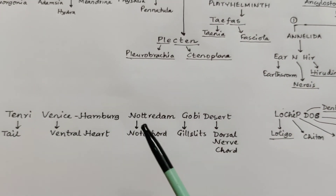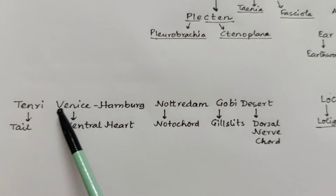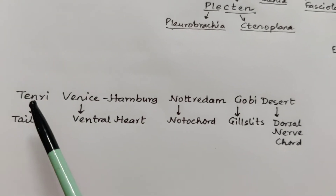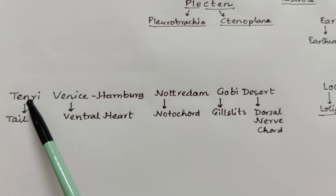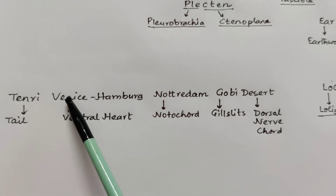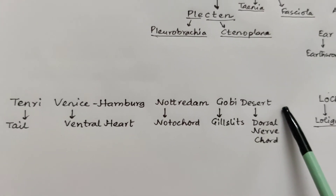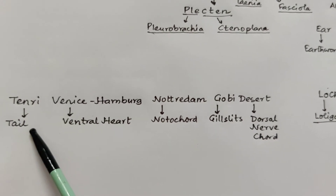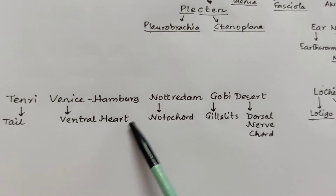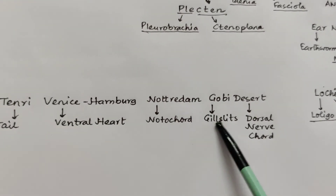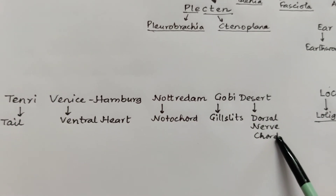If we want to know the main characteristics of non-chordates, we have to know the characters of chordates first. For that, we remember this sentence using cities and deserts: Tenry — a Japanese city, Venice, Hamburg — European cities, Notre Dame, and Gobi Desert. Tenry for post-anal tail; Venice-Hamburg for ventral heart; Notre Dame for notochord; Gobi for gill slits; and Desert D for dorsal nerve cord. These are the chordate features.